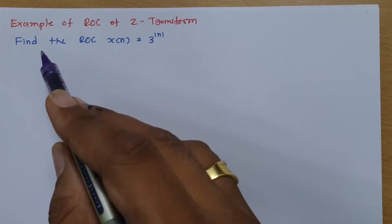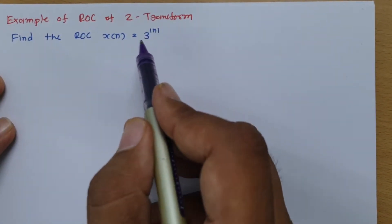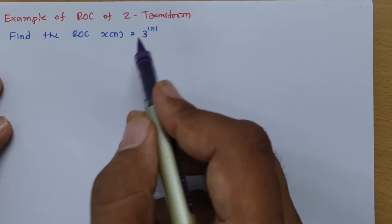We have a question: find the ROC of x(n) = 3 to the power |n|.